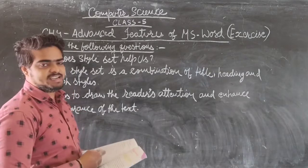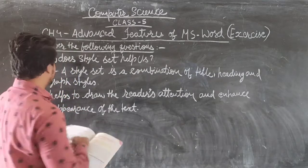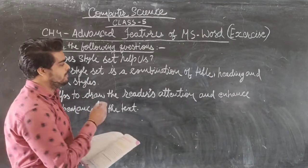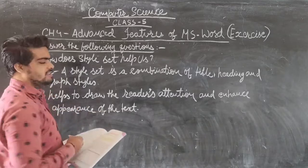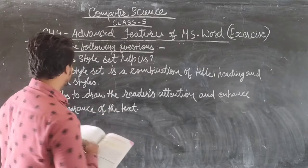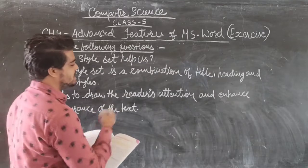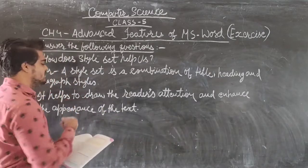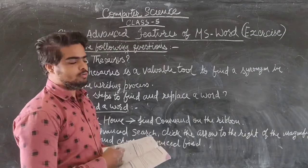Question three — how does style set help us? Style set is a combination of titles, headings, and paragraph styles. It helps to draw the reader's attention and to enhance the appearance of the text in the document.